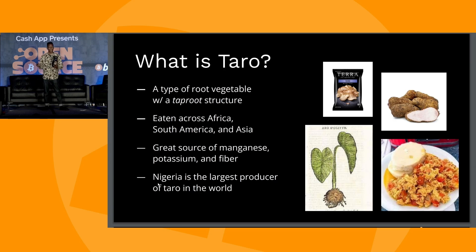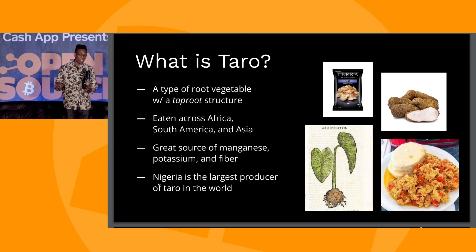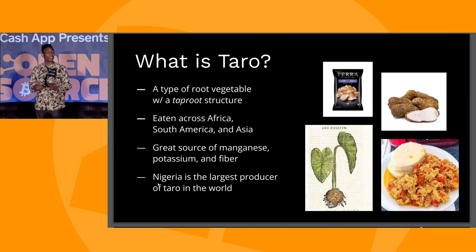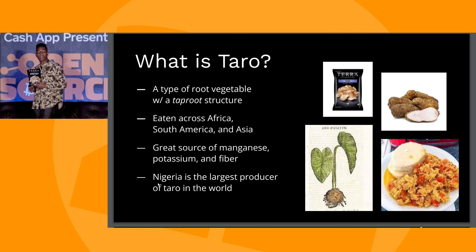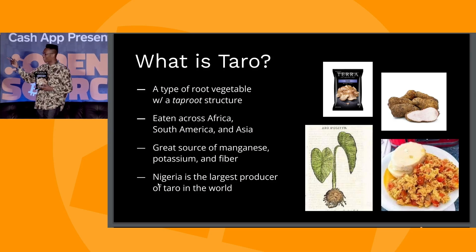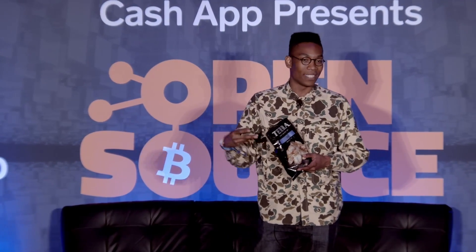So Taro is actually a root vegetable with a taproot structure. It's eaten across many parts of the world — Africa, South America, Asia. It's actually one of the most ancient staple crops, going back tens of thousands of years. It's a great source of manganese, potassium, and fiber. For the Bitcoin vegans, the Bitcoin vegetarians — Nigeria is one of the largest producers of Taro. It's kind of like a yam. I used to eat it back in the day with egg — that's a big meal, very easy and really tasty.